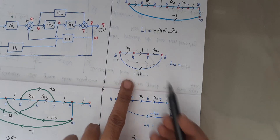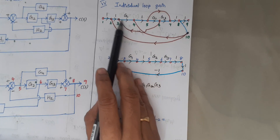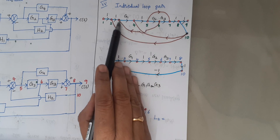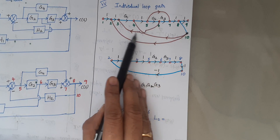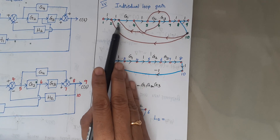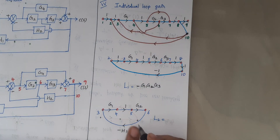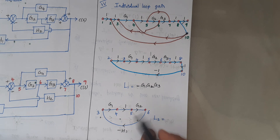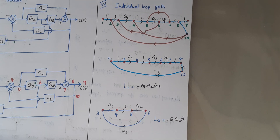The next loop takes the path 3, 4, 5, 6, and from 6 it returns to node 3. The gain is G1 × G2 × (−H1), so minus G1 G2 H1 is the gain of this loop.